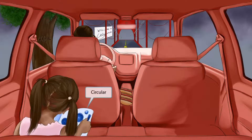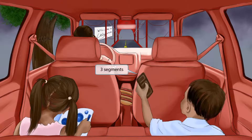We've added a little girl inside of the car who appears to be in her own little world, just enjoying the drive and drawing some circles in her coloring book. These circles should help you remember that the RNA structure is circular. Now we've shown a little boy who is about to eat a candy bar. The bar is clearly divided into three segments, which is here to help you remember that the RNA structure is divided into three segments.